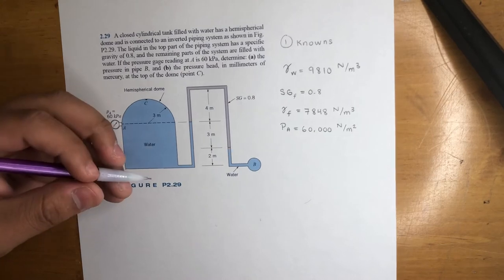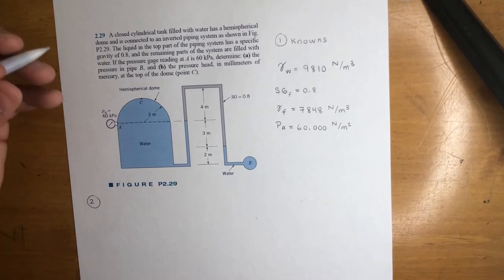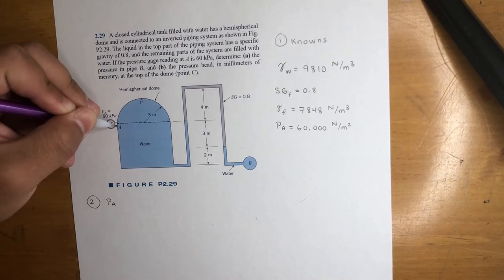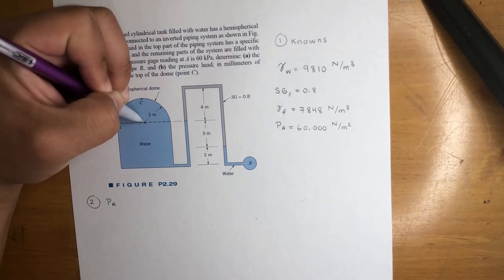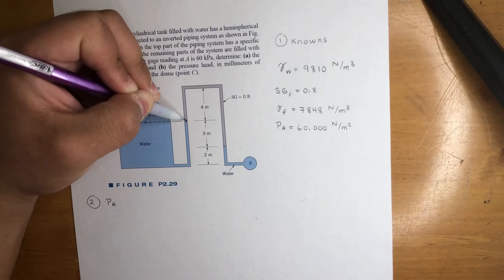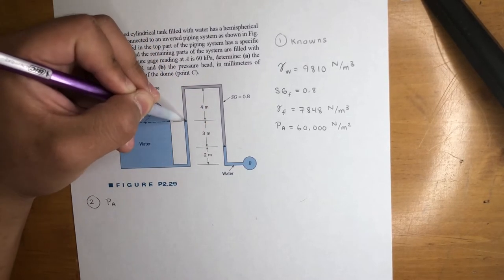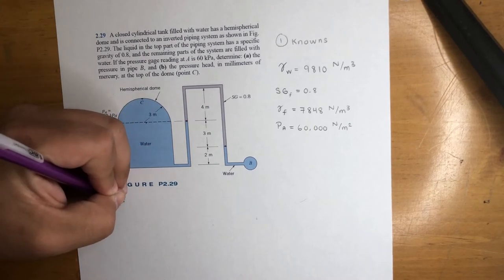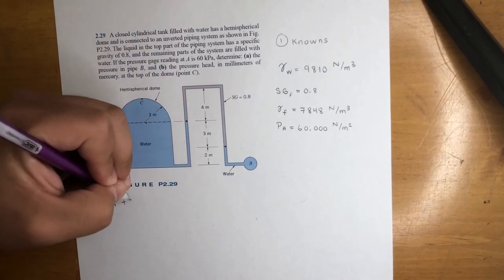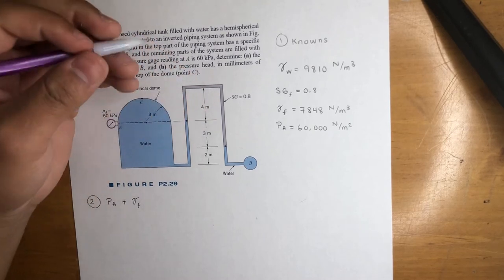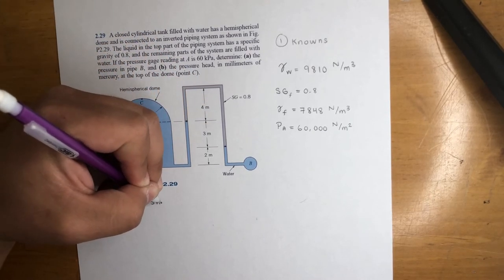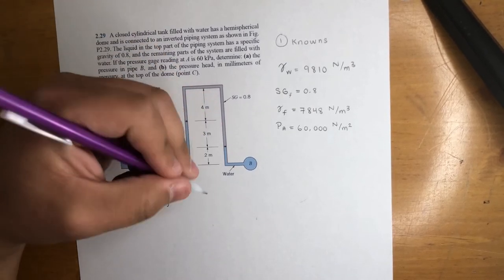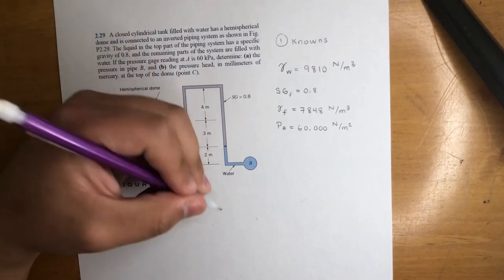First step, let's do the equation. We want to find the pressure at point B, so we start at point A. We're at this point, and we're going to go down from this point to this point - that's three meters. We're going down with the specific weight of fluid, so it's gamma fluid times three meters, and that's positive. Now we're going down one more time, another positive. This time it's water times two meters, and now we arrive at point B.